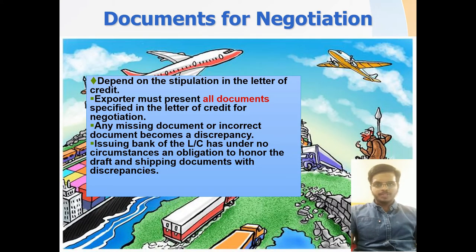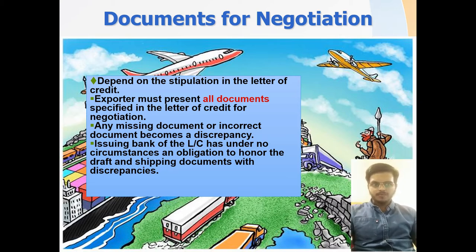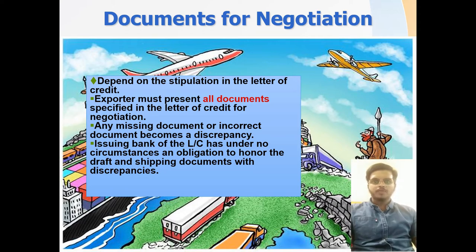The documents for negotiation depend on the stipulations in the letter of credit, and the exporter must present all documents specified in the letter of credit for negotiation. Any missing or incorrect documents become a discrepancy. Moreover, the issuing bank of the LC is under no circumstances obligated to honor drafts and shipping documents with discrepancies.